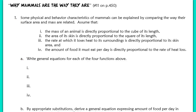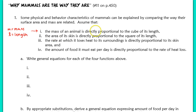In part A, we're asked to write general equations for each of the four functions listed above. Starting with the first line: the mass of an animal is directly proportional to the cube of its length. I'll let M equal the mass of the animal and L equal the length. So the equation for line 1 is M equals K₁ times L cubed, where we label the constant K sub 1 since we'll have multiple constants in these problems.